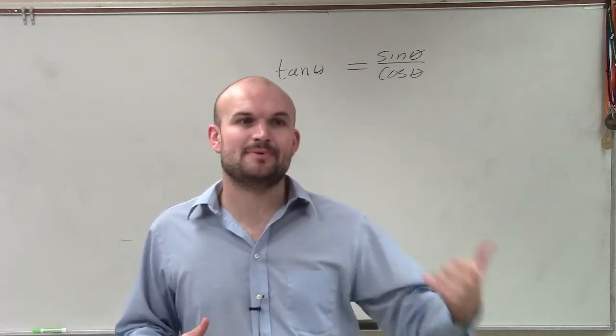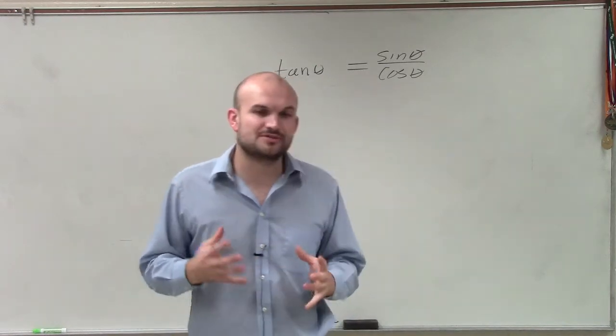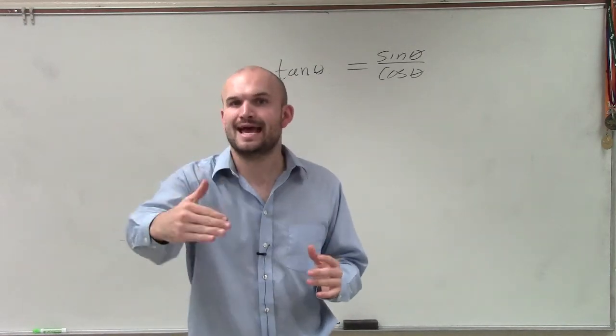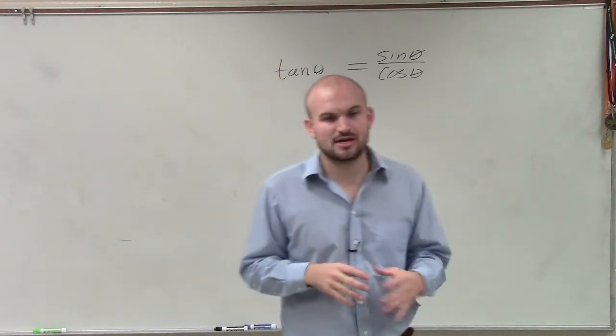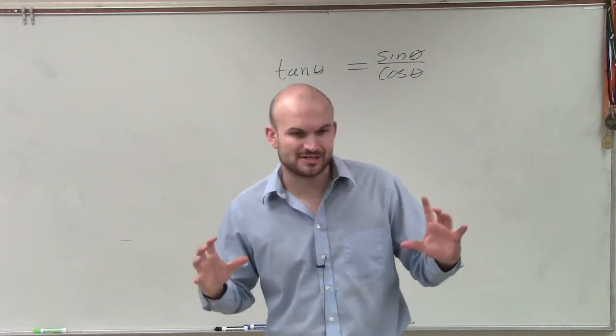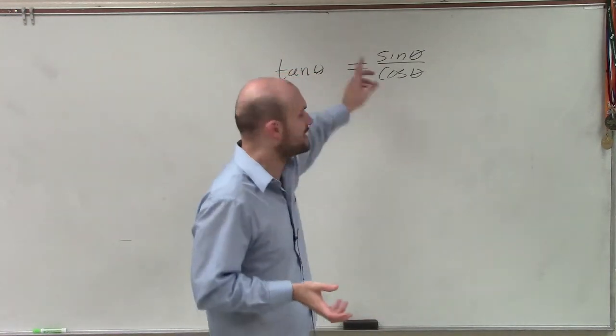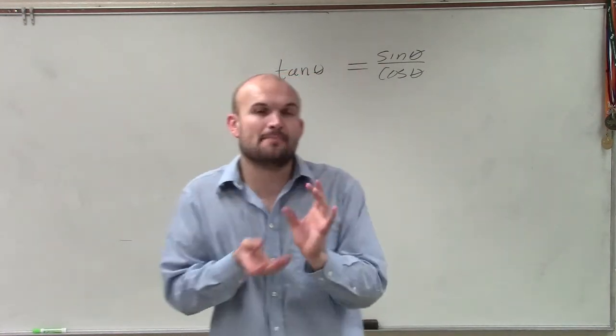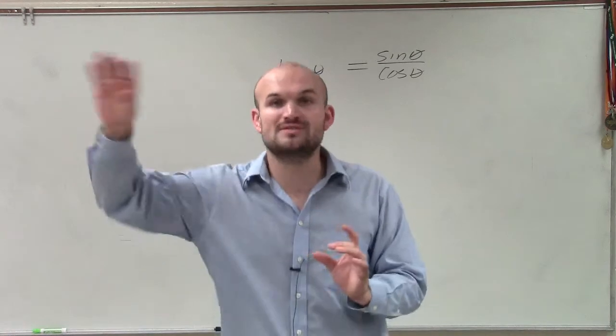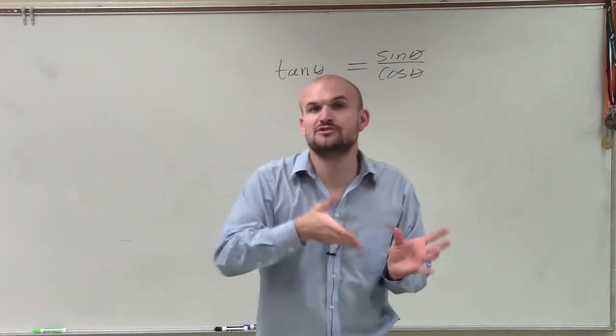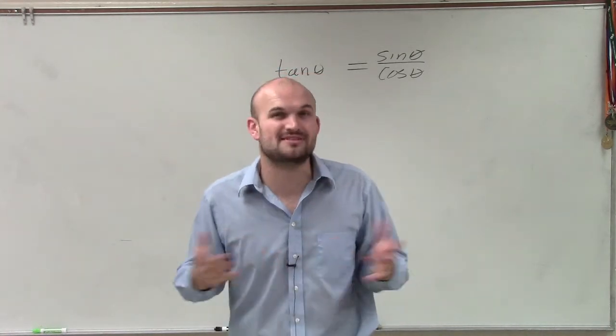And as you keep on working through these types of problems, I'm hoping that you start seeing yourself looking ahead. You start seeing yourself by, if I have tangents, I know that tangent has cosine in the denominator if I rewrite it as sine over cosine. Therefore, I'm going to want to pair as many tangents with cosines in the numerators so then I can use the multiplicative inverse to have those divide into one.